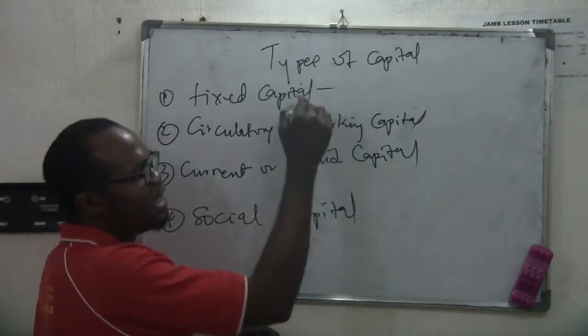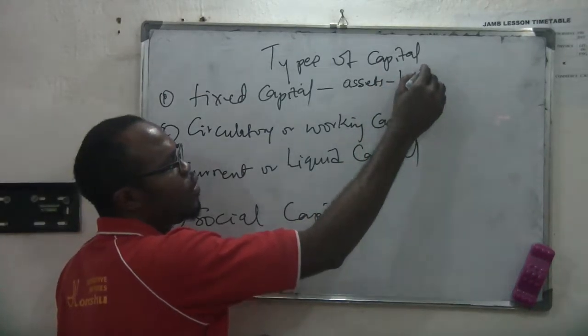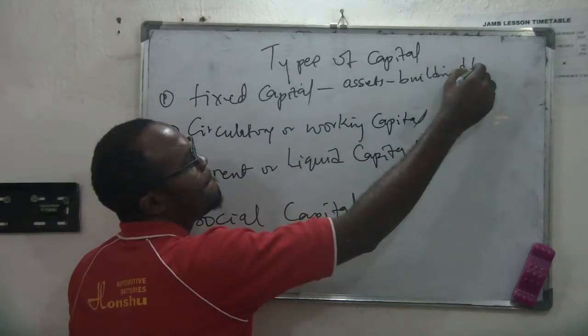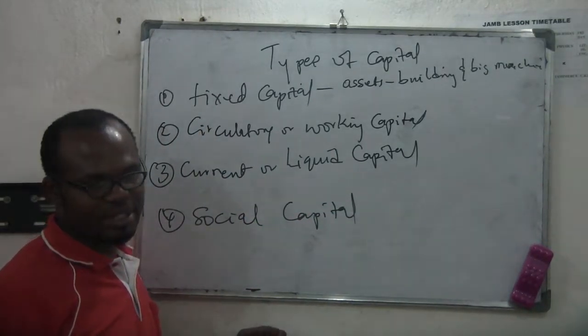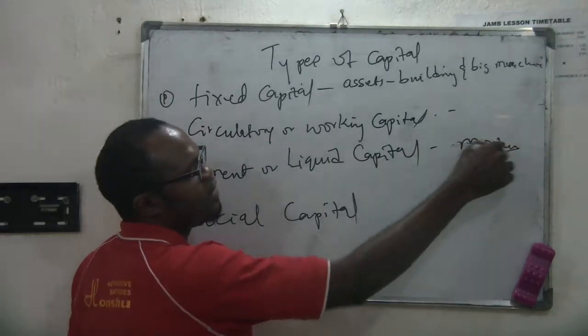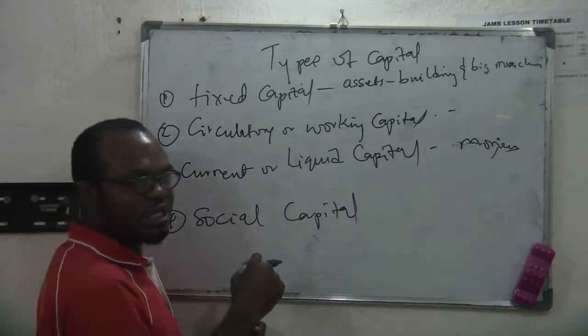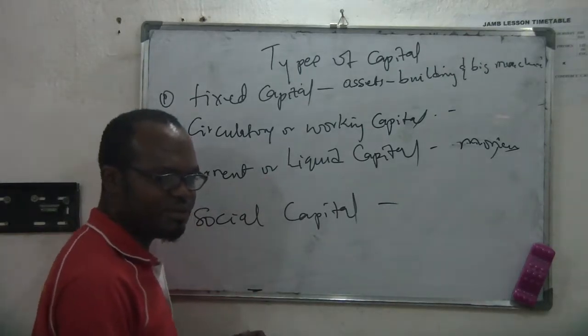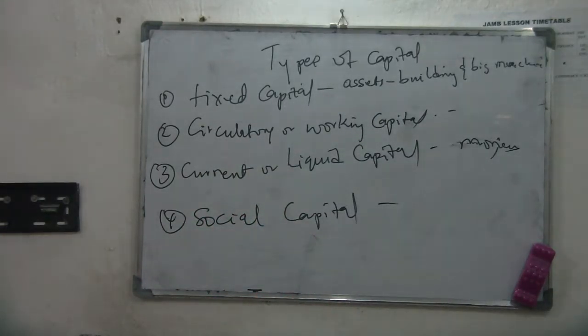Types of capital — what are the types of capital that we have? Number one is what we call fixed capital. Number two is what we call secondary or working capital. Number three is what we call current or liquid capital. And number four is what we call social capital.